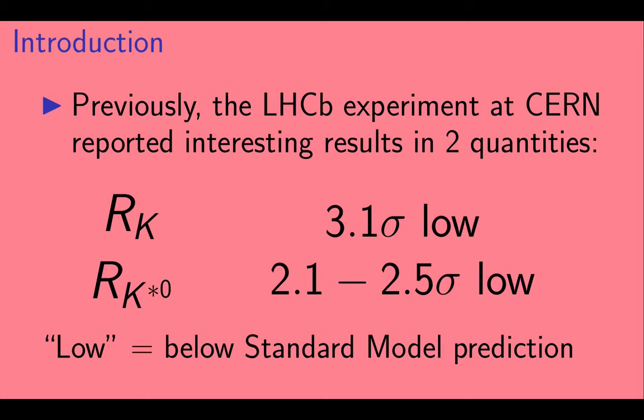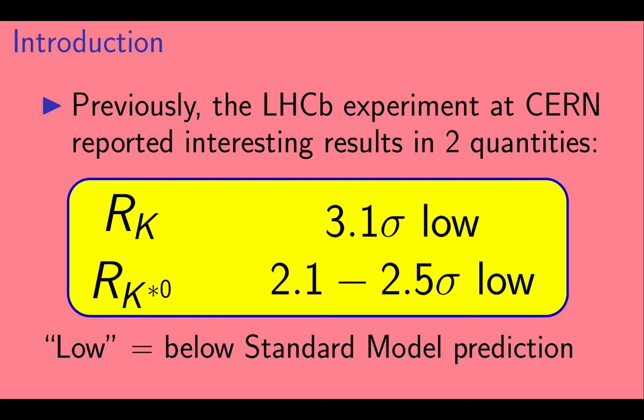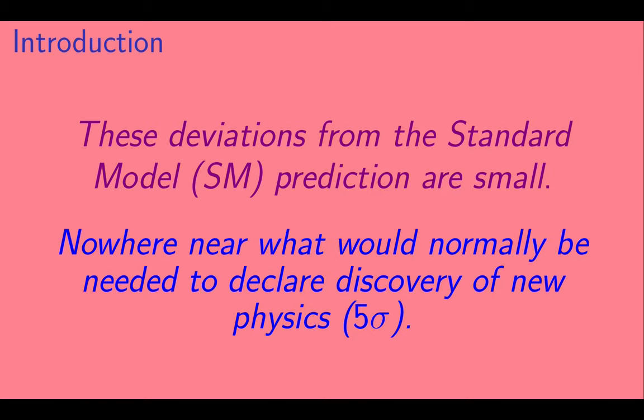These quantities are called RK and RK star. The measured values of these quantities came out below the standard model prediction. RK was 3.1 sigma below the SM prediction, and the RK star measurements were between 2.1 and 2.5 sigma low.